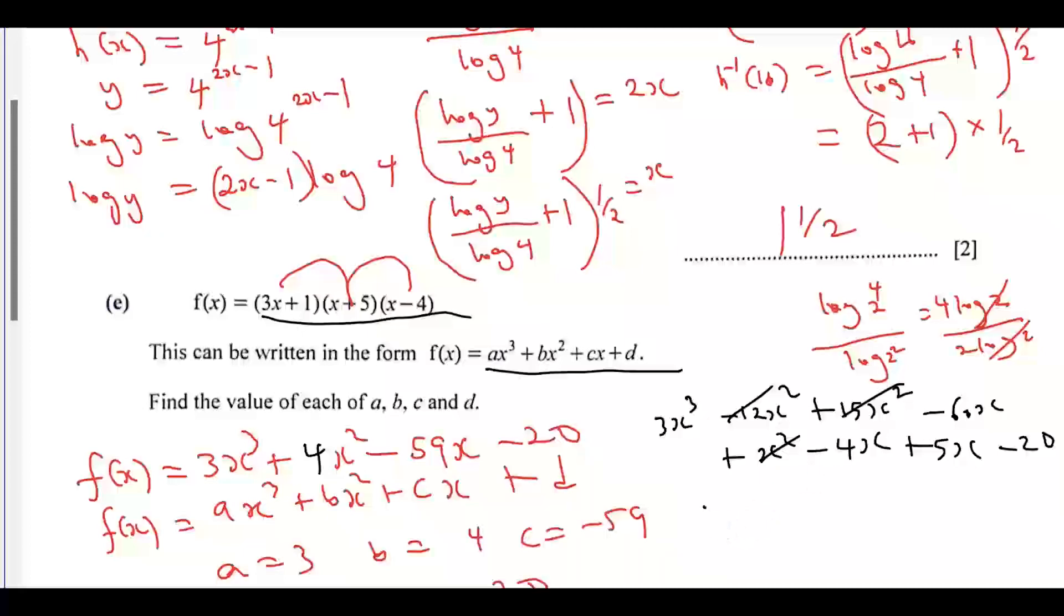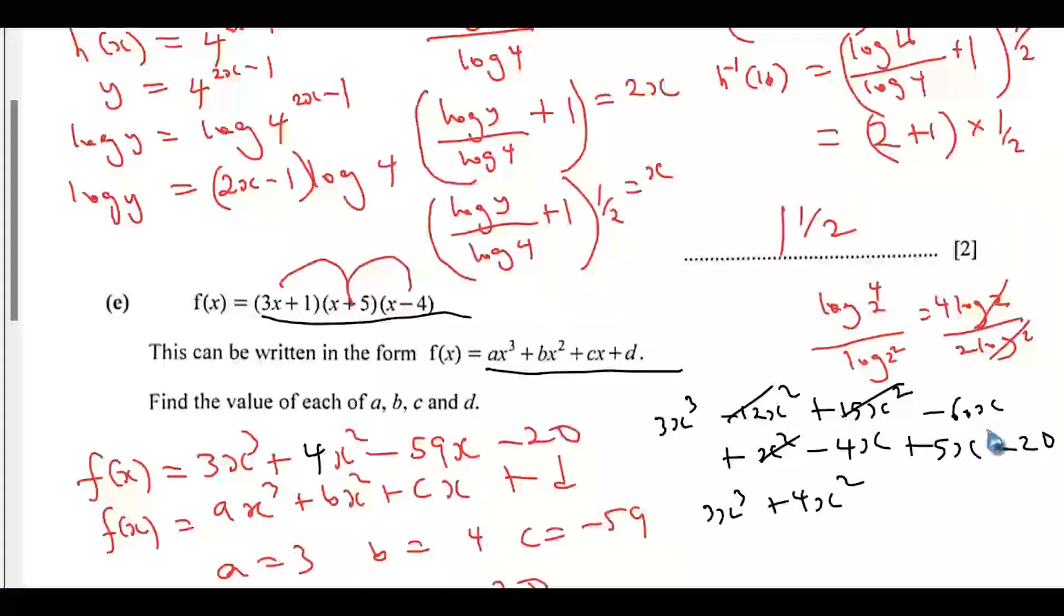You have 3x cubed plus 4x squared. Then minus 16x plus 5x will give you minus 55x. Minus 55x minus 4x will give you minus 59x and you have minus 20.